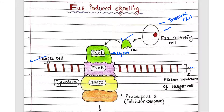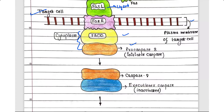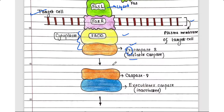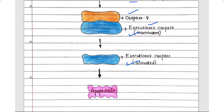Along with the FAS receptor, FADD and pro-caspase 8 also bind as cytoplasmic proteins. Pro-caspase 8 is in the inactivated form within this complex. Once activated, pro-caspase 8 becomes caspase 8, which then binds the executioner caspase — also initially inactive. When the executioner caspase binds caspase 8, it becomes activated, cleaves downstream proteins, and continues the apoptosis process.